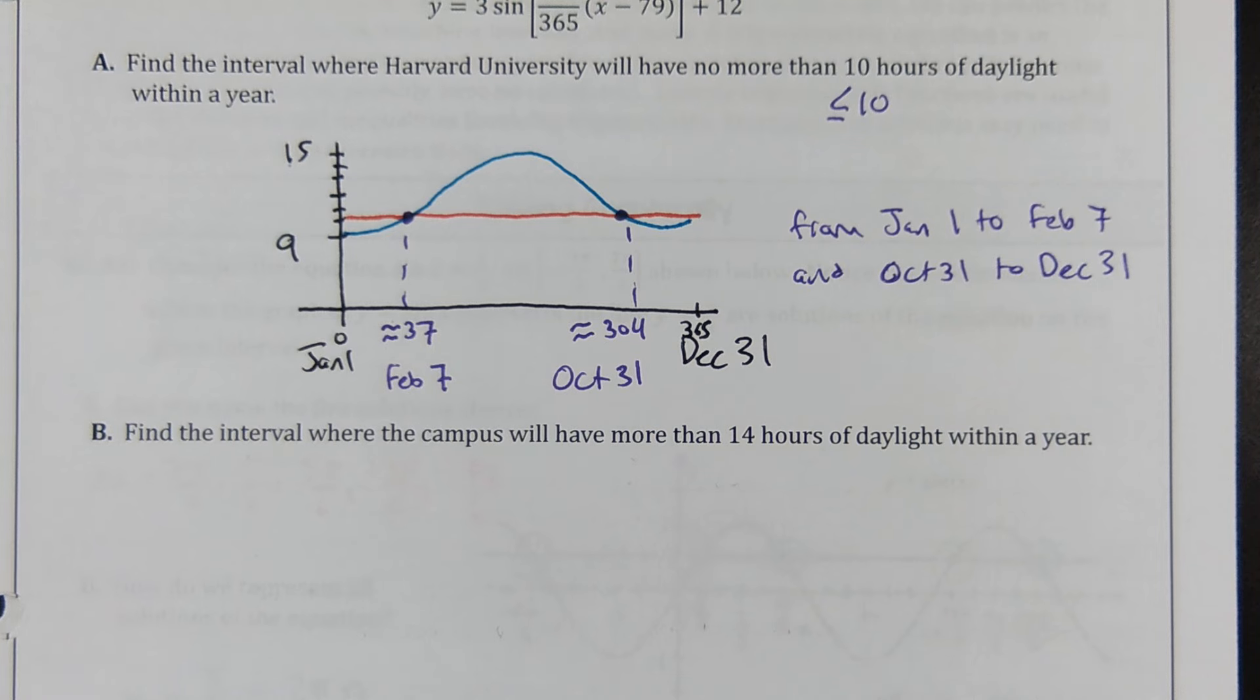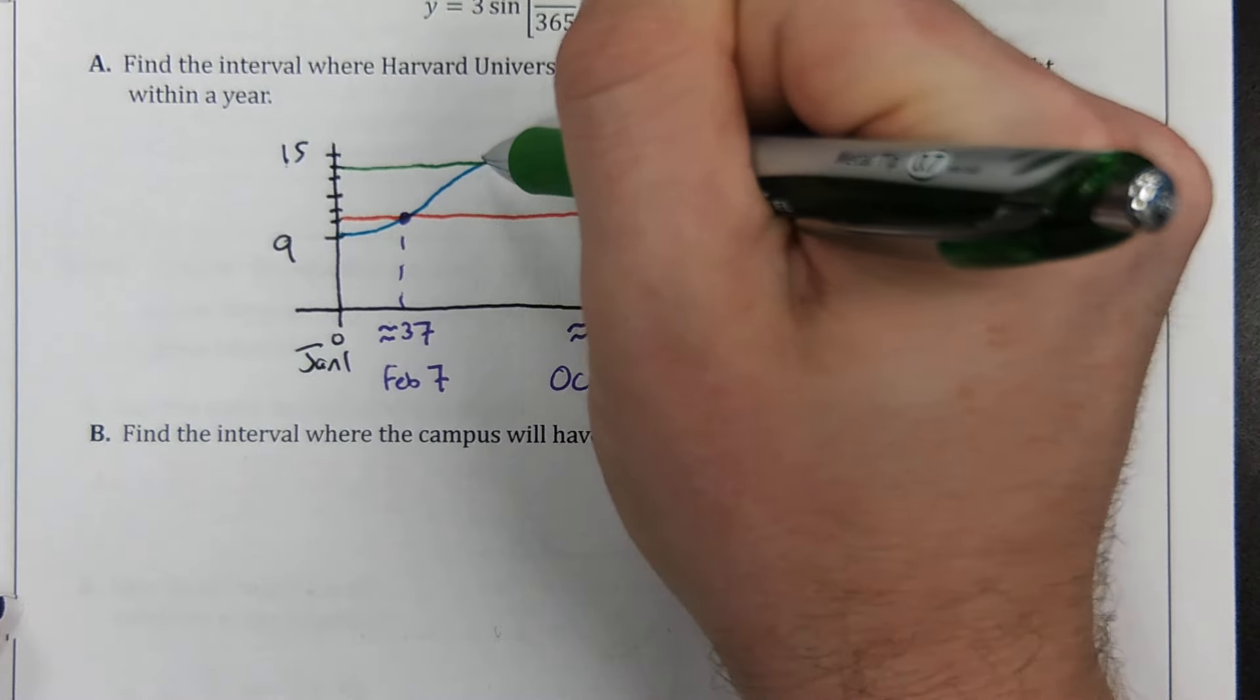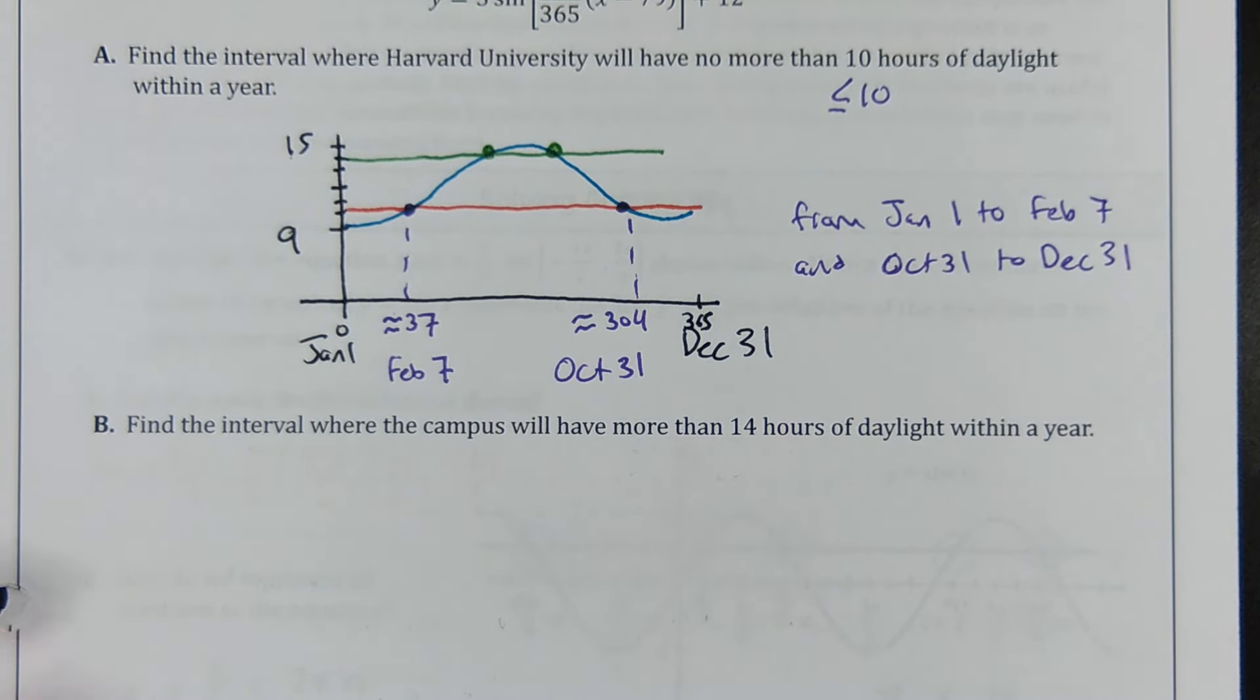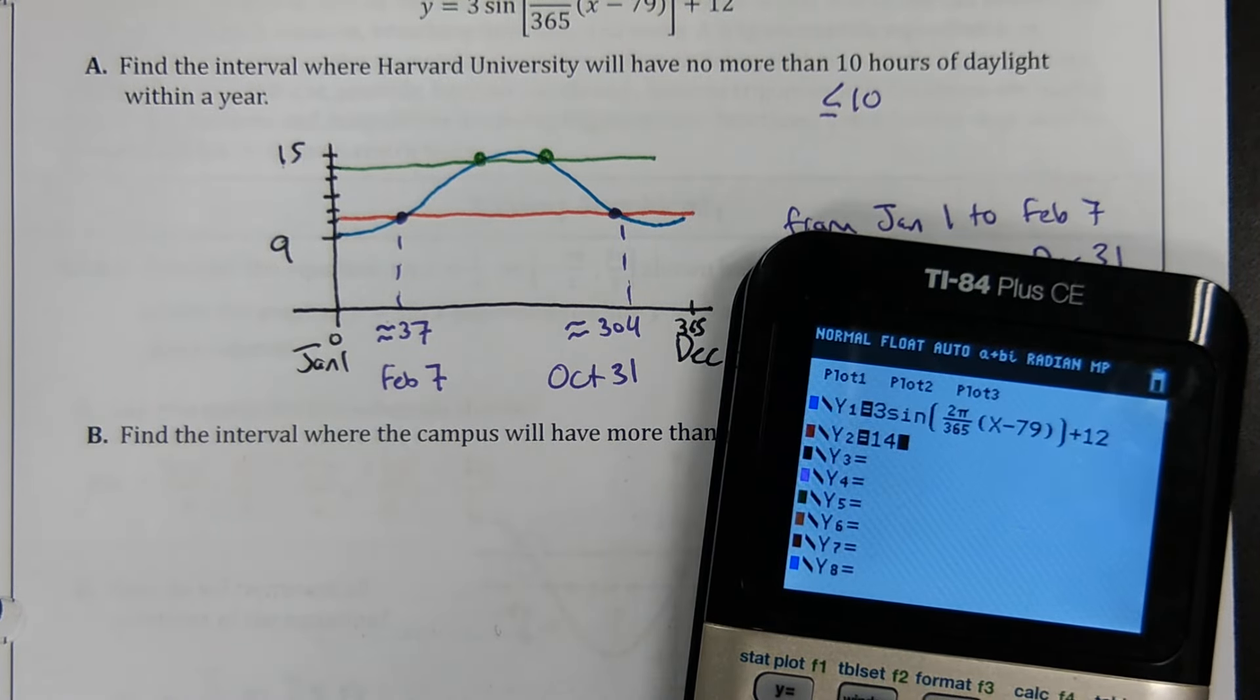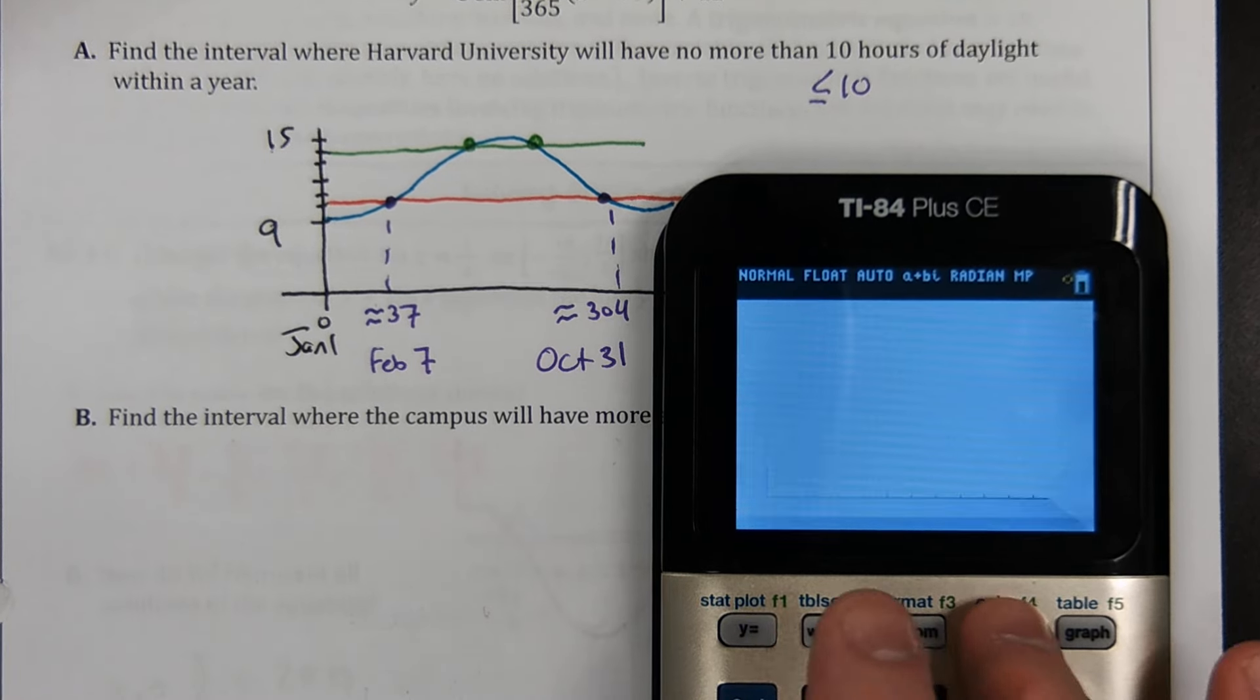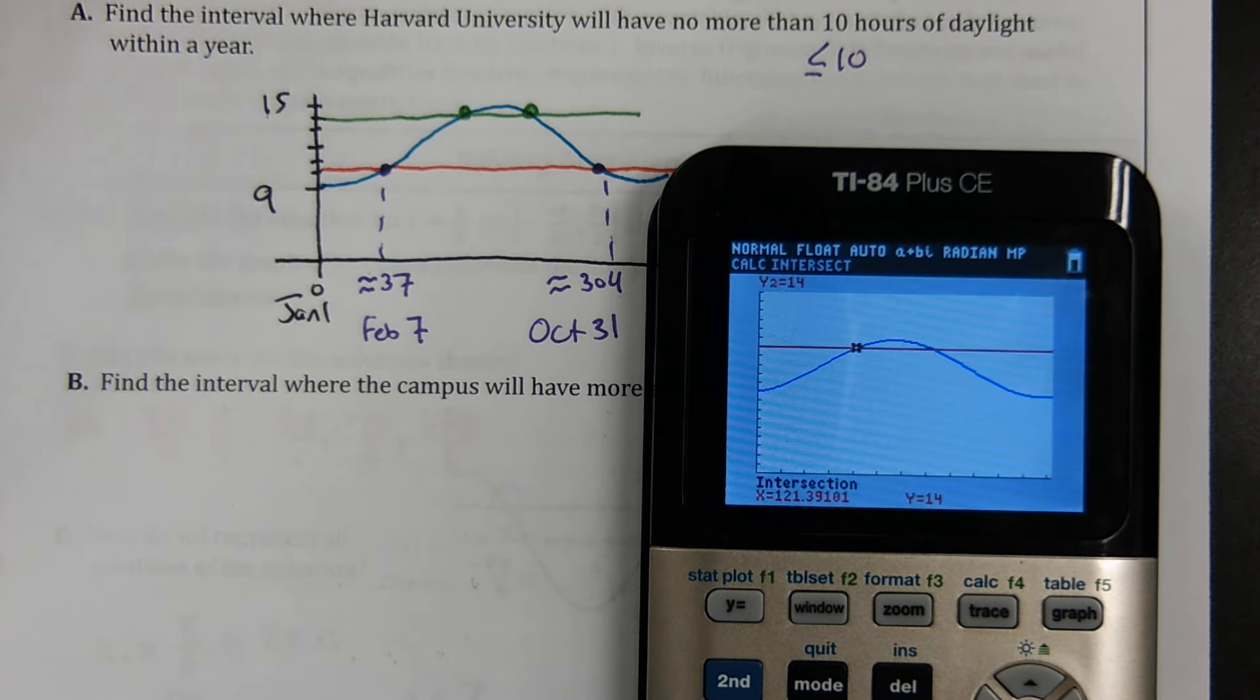All righty, so the interval of time is going to be from January 1 to February 7th and October 31 to December 31. The next question says find the interval of time when the campus will have more than 14. Well, 14 was way up here. So I'm going to go from here to here for part B. So when I go with my Y equals, I'll change my 10 to a 14. That way I don't have to. Oh great, I've got to wait for it to finish graphing the trig again. Darn it. All right. Second trace intersect. Second trace 5, enter, enter, scroll. At least these two are close together. I don't have to scroll forever.